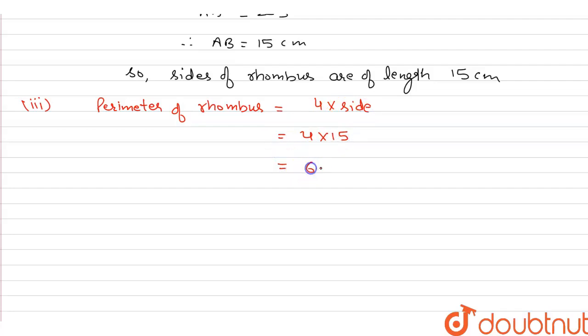So perimeter of rhombus is 60 centimeter. Thank you.